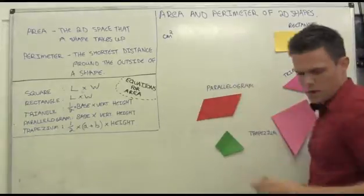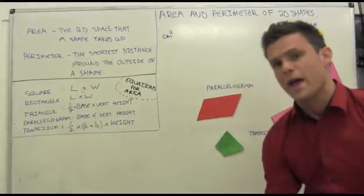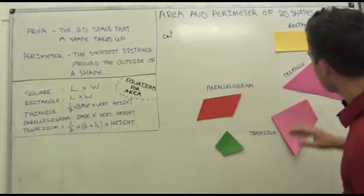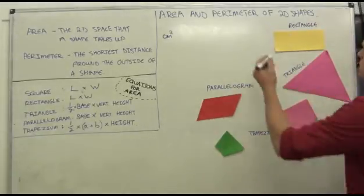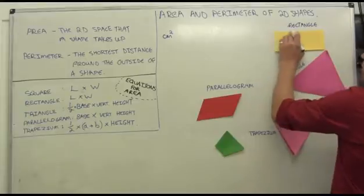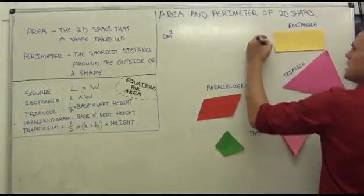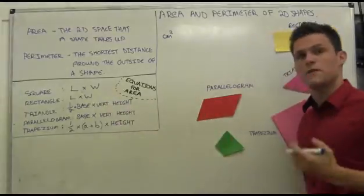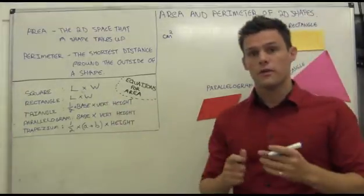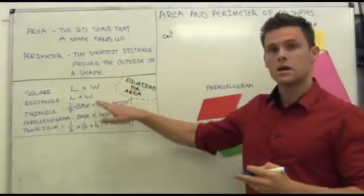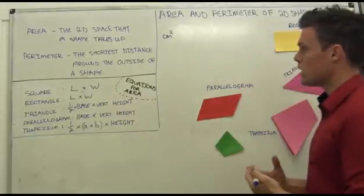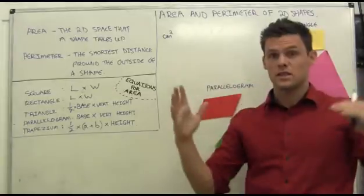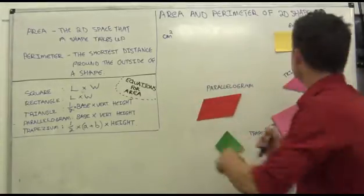Moving on to a rectangle — a rectangle is simply a square that's been stretched out. Just as with the square, I simply work out how long it is and how wide it is, and multiply them together. For both the square and the rectangle, the formula is simply length times width, working out how many little square units fit into that whole area.